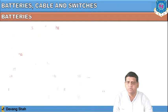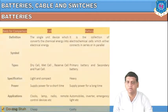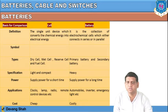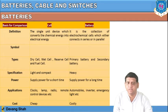Let us start with today's subject: batteries. First we need to understand what a battery is, and we begin with a basic comparison between a cell and a battery. A cell is a single unit device which converts chemical energy into electrical energy. A battery is nothing but a collection of electrochemical cells connected either in series or parallel — an array of cells connected in series or parallel.